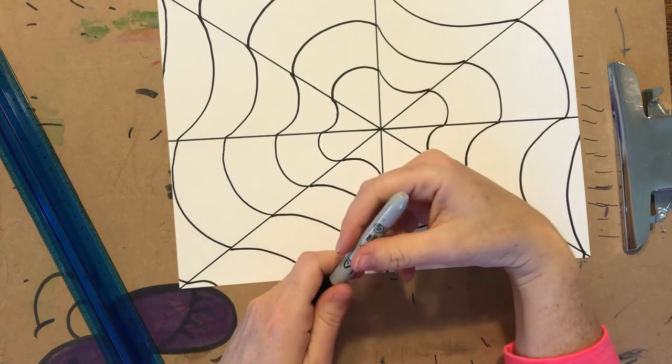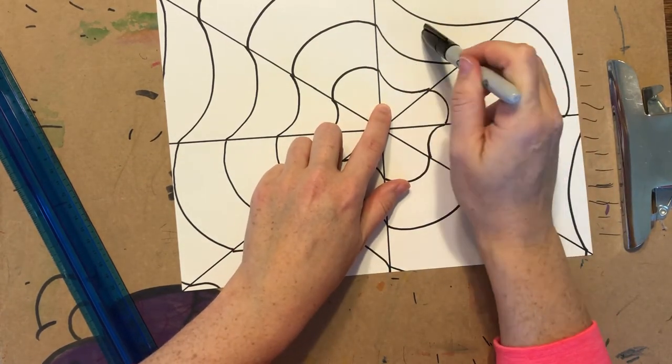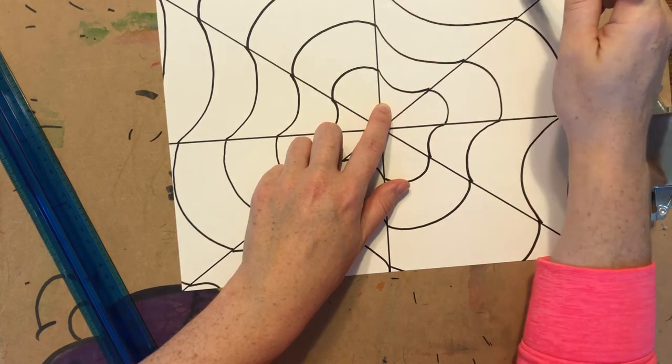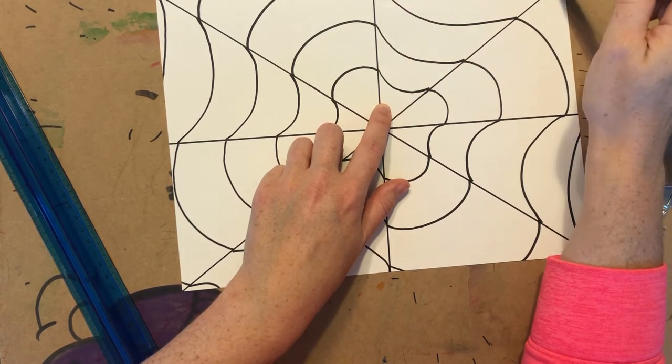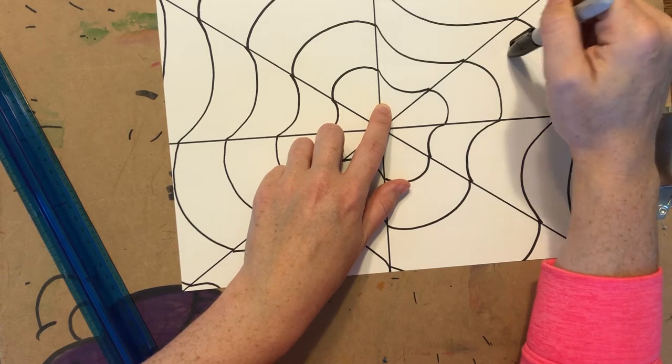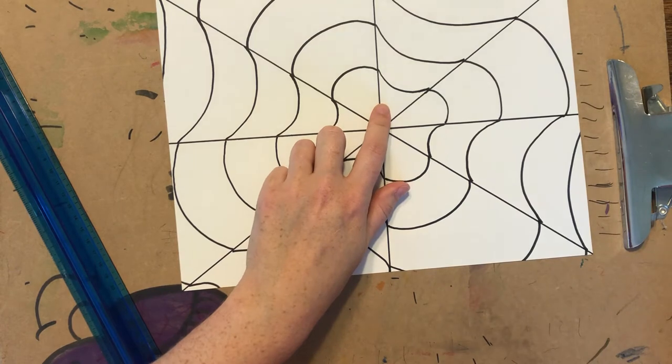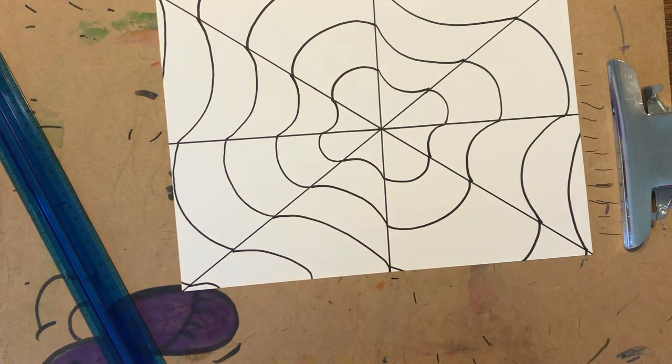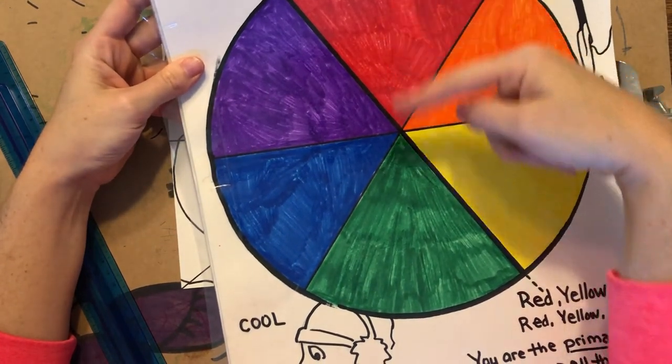Okay, so now from here you can do opposites. So you could do black, white, black, white, black, and then in the other side you would do white, black, white, black, white. You can do the opposites. You could do complementary colors. So what are complementary colors? If you look at our color wheel, they are opposite on the color wheel. Red, green.